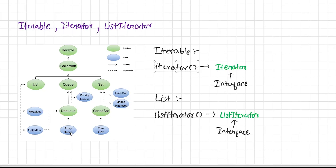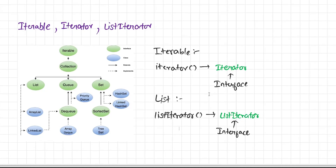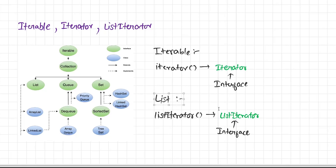The list iterator is only specific to ArrayList and LinkedList, whereas the iterator interface is implemented by all other collection classes — for example ArrayDeque, PriorityQueue, TreeSet, HashSet, and LinkedHashSet. So there are four interfaces that play a crucial role: iterable interface, iterator interface, list interface, and list iterator interface.